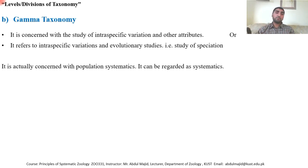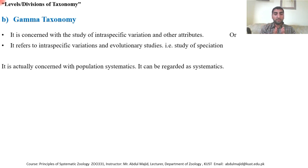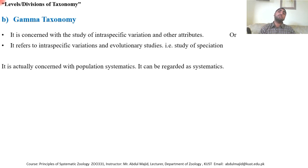Gamma taxonomy is concerned with population systematics. It can be regarded as systematics, because in systematics we study why certain characteristics are different or similar and the reasons behind those differences and similarities.